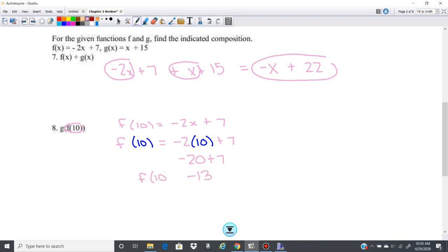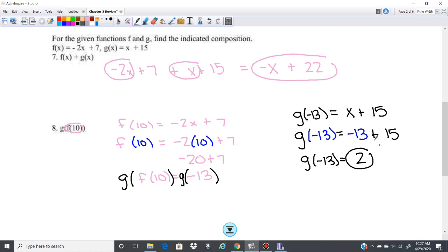So f(10) = -13. I'm doing g(f(10)). If I do g(f(10)), that's the same thing as saying g(-13), because f(10) is -13. So here you're doing g(-13), and that's going to be x + 15. So -13 will go in here for this x. You have g(-13), and that's going to be -13 + 15, which gives you +2. So g(-13) is +2, which is g(f(10)). The answer is +2.